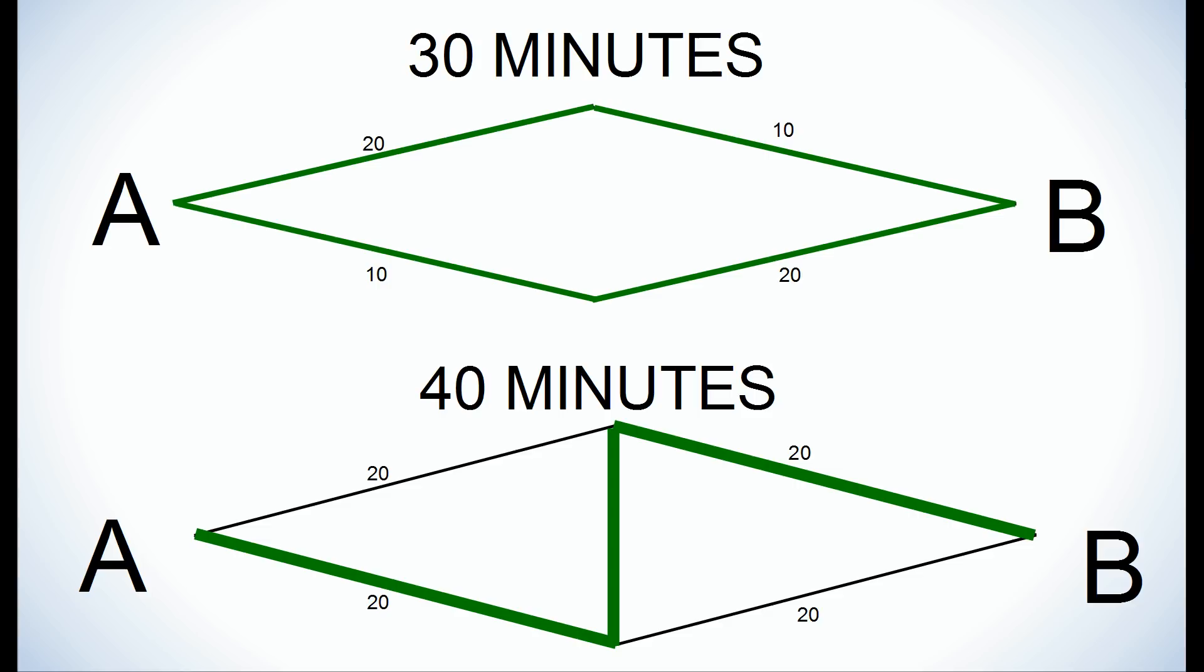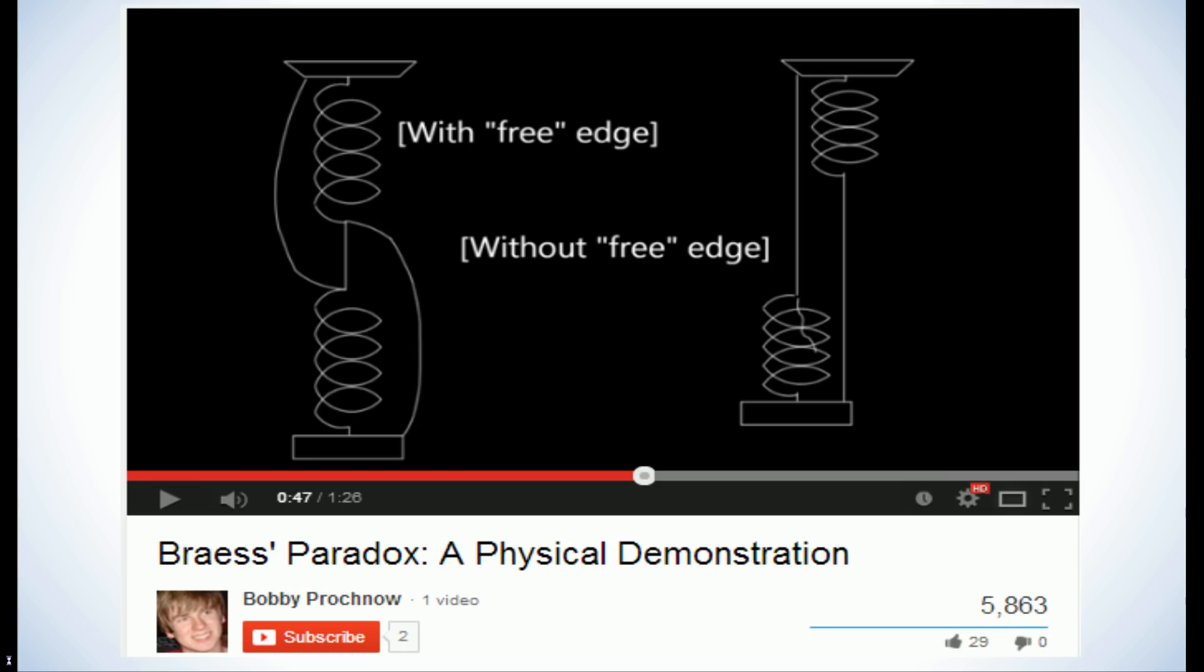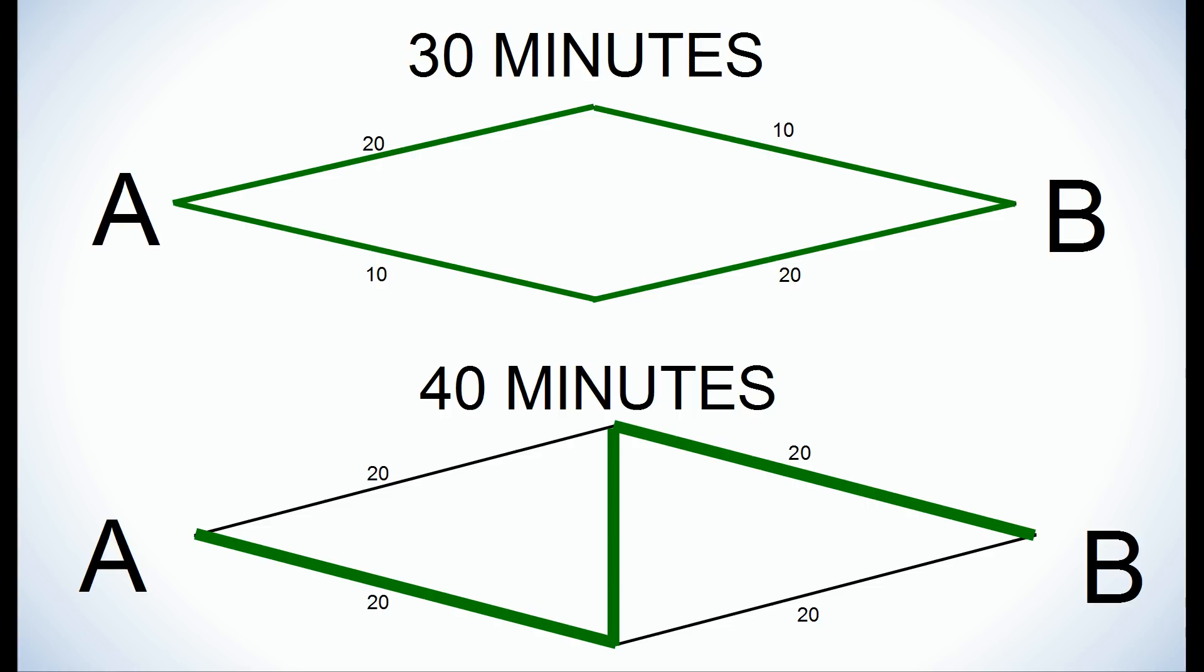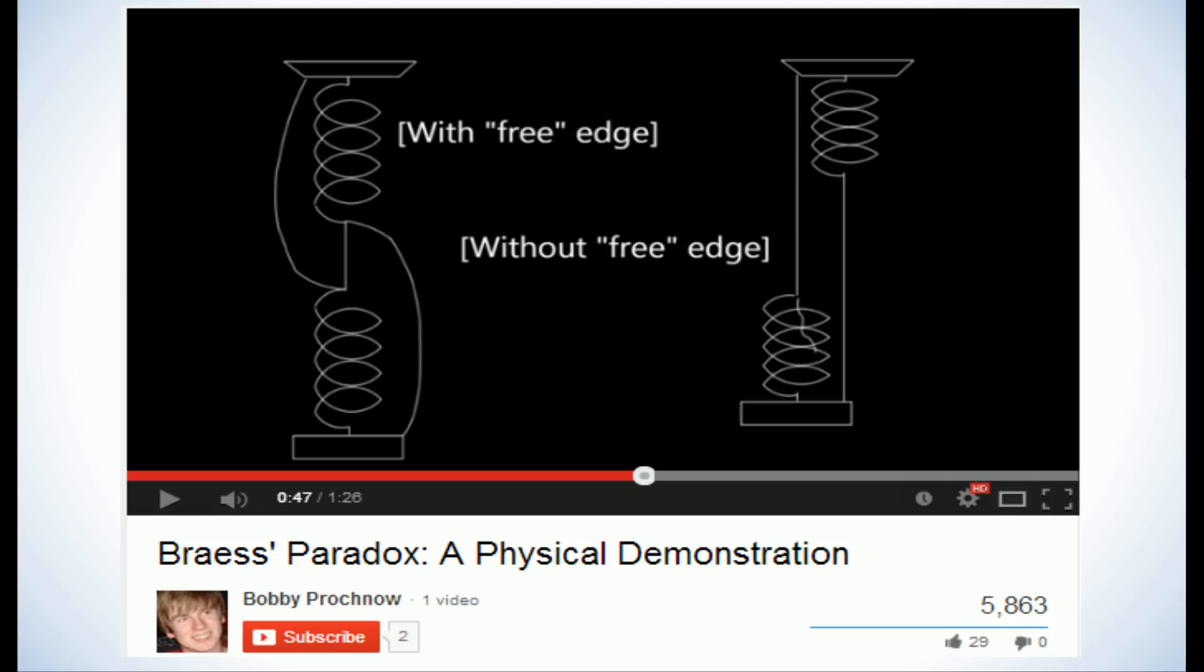The Braess Paradox can come up in many situations. In physics, it can affect how far a set of springs stretches under a constant force. In electricity transmission, it can affect the speed of power being delivered on the grid.